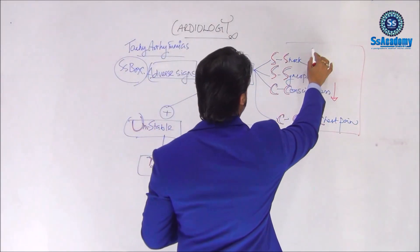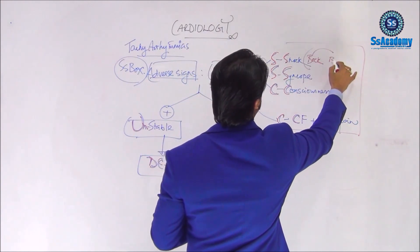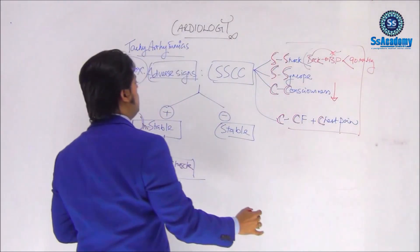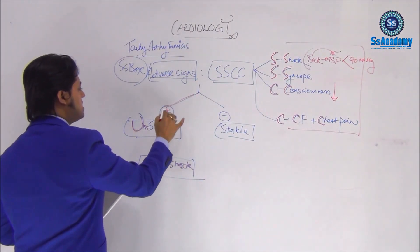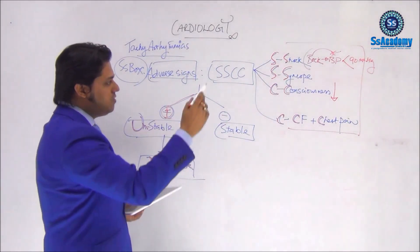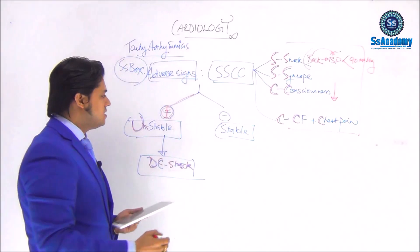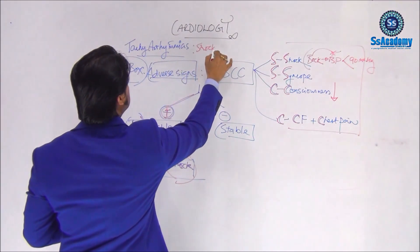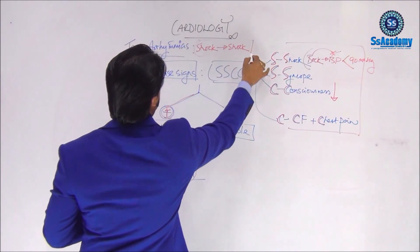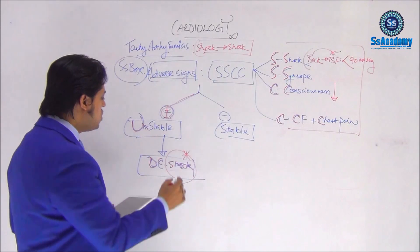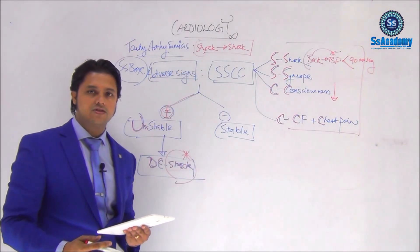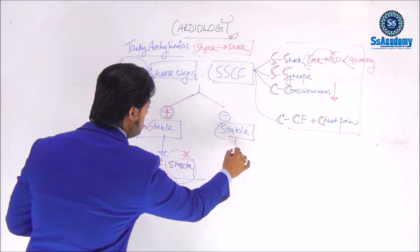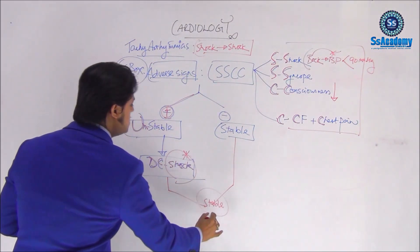Shock means systolic BP is less than 90 mmHg — must remember. Shock is the most important adverse feature. If shock is present, the treatment is DC shock. After DC shock, if the patient becomes stable, we then classify the patient further by looking at the QRS complexes.